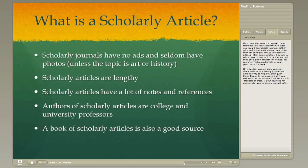Scholarly articles are themselves research, so they have a lot of notes and references — usually endnotes, but some journals print notes at the bottoms of pages — and they all have a works cited list at the end. The authors of scholarly articles are themselves college and university professors. And then there is also that book of scholarly articles I mentioned, which your librarian can help you find.